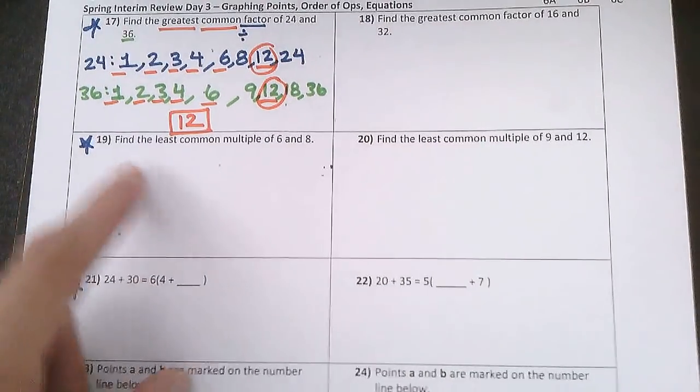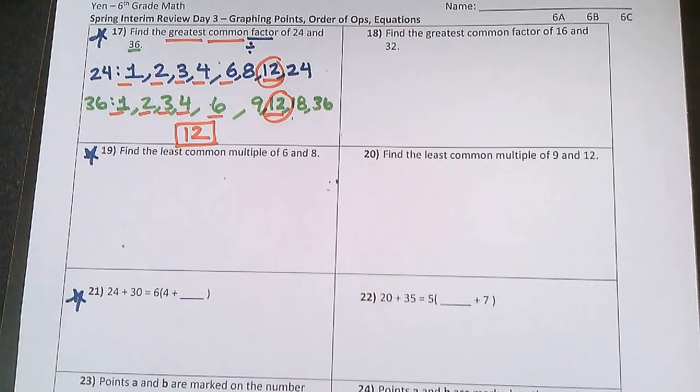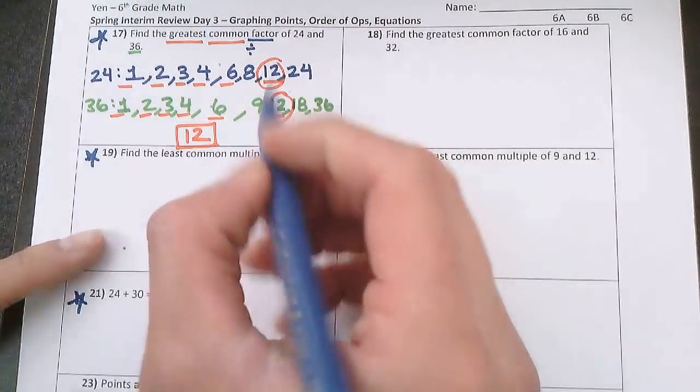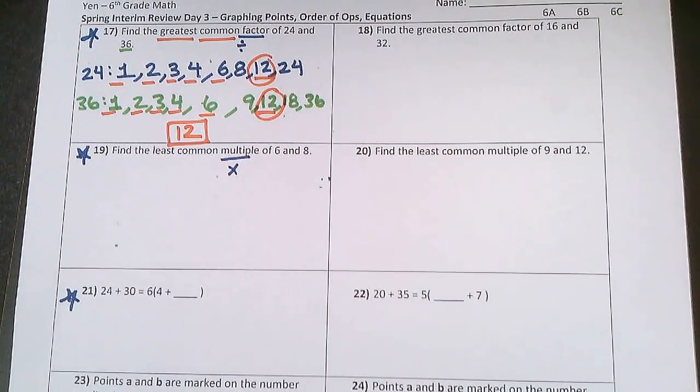Number 19, find the least common multiple of 6 and 8. So multiple, unlike factors, I want you to think of multiplication. Multiples of a number are all the numbers that the number can multiply up to.